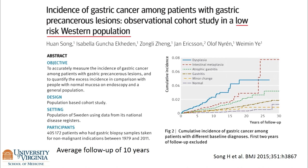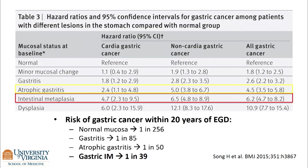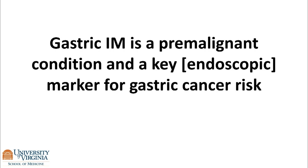This is a large population-based study from Sweden I've liked for a long time — over 400,000 participants, average follow-up over 10 years. They found that for patients in this low-risk Caucasian population who had IM, 1 in 39 over 20 years would develop cancer — a little more than 2%. So gastric IM is a pre-malignant condition and a key endoscopic marker for gastric cancer risk. Atrophic gastritis probably is as well.